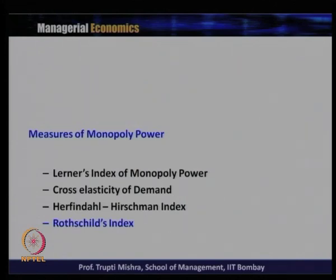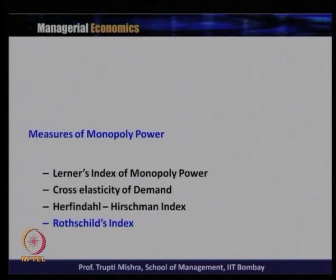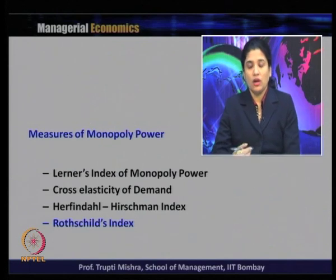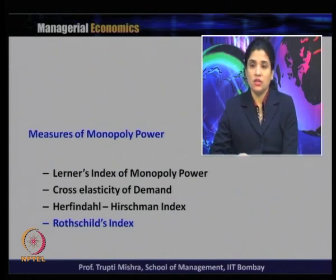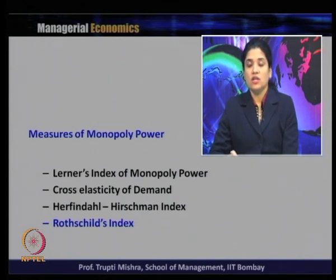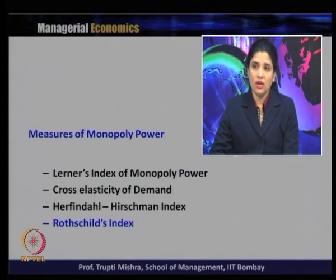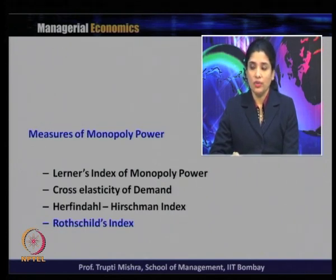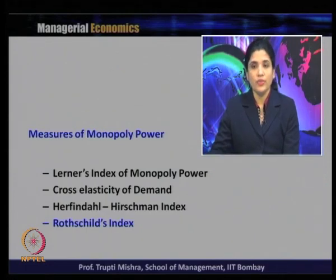In the last class we discussed the measurement of monopoly power. There are different methods whose index values tell us what kind of market form it is — whether it is perfect competition, monopoly, or somewhere in between such as monopolistic competition. We discussed the Lerner index, the cross elasticity of demand, the Herfindahl-Hirschman Index, and we introduced the Rothschild index, which we will discuss further today.